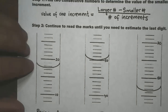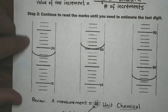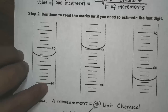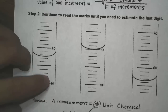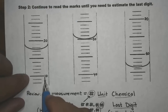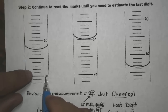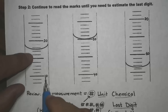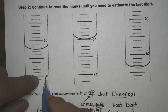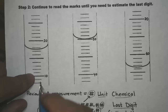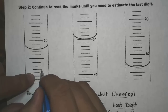Here I have a graduated cylinder — specifically a 100 milliliter graduated cylinder. It has two labeled values: 10 and 20. Notice how an instrument doesn't label all the marks. The question is how do we find the values of one increment, especially the smallest one?